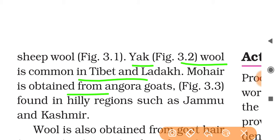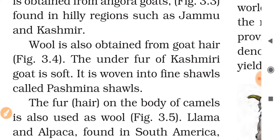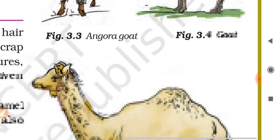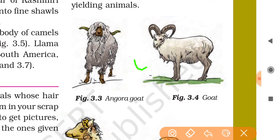Mohair is obtained from angora goats found in hilly regions such as Jammu and Kashmir. Wool is also obtained from goats. In figure 3.4 you can see the angora goat — these goats are also easily found in mountain areas.